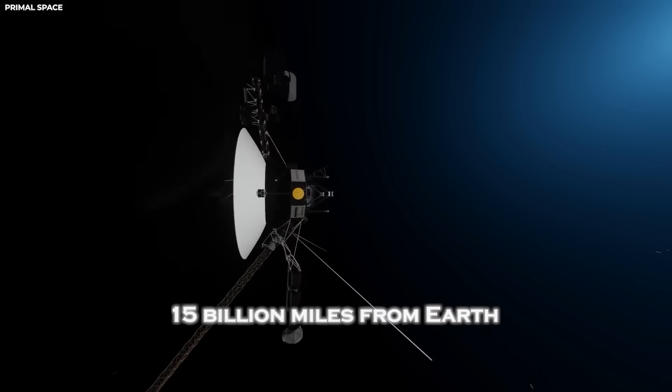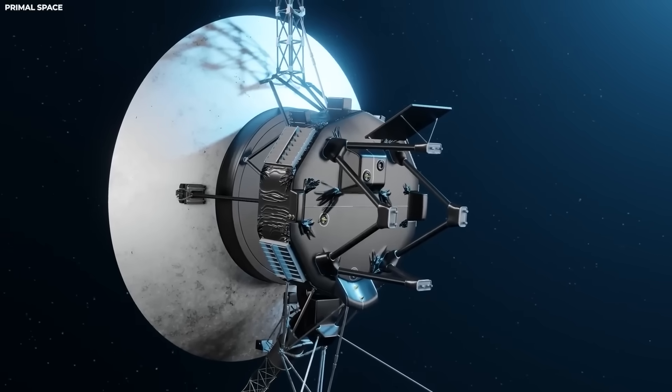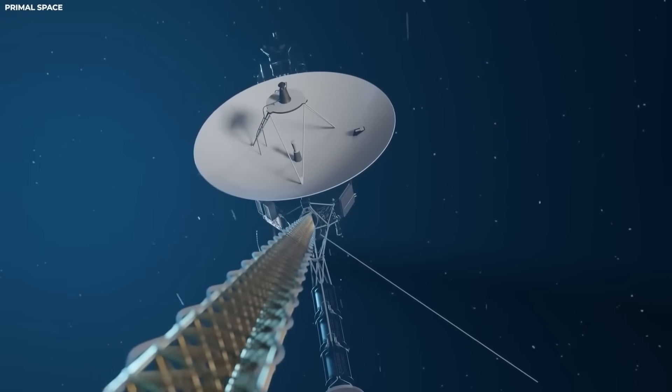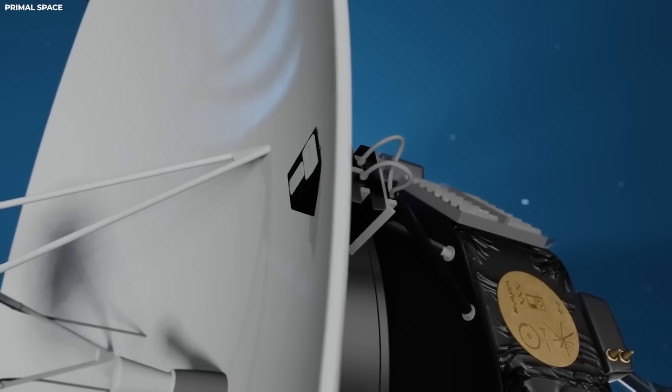What had Voyager seen in its instruments, and why had it reoriented so precisely? At a distance of over 15 billion miles from Earth, there is no autopilot, no corrections, no assistance. And yet, Voyager made a decision, or so it seems.